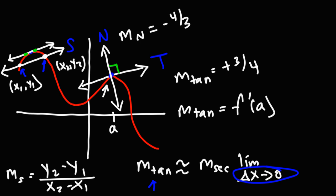And once you know the slope of the tangent line, you can find the slope of the normal line. So that's the basic difference between the three. If you need to calculate the average rate of change, you're basically calculating the slope of the secant line. If you need to calculate the instantaneous rate of change, you're calculating the slope of the tangent line. Make sure you understand that difference.